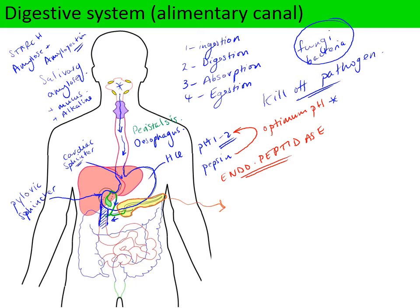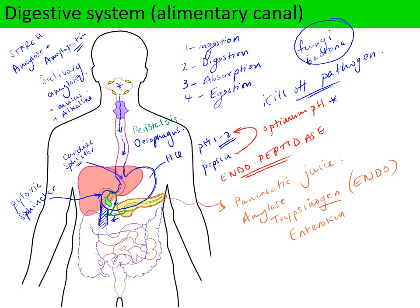The pancreas is an endocrine gland that secretes hormones like insulin but also makes digestive enzymes. Pancreatic juice contains pancreatic amylase to break down starch, and an enzyme called trypsinogen, which is another endopeptidase that breaks down larger proteins into shorter fragments. Trypsinogen is an inactive form of endopeptidase. Another enzyme from the pancreas called enterokinase cleaves off a portion of trypsinogen to activate it, releasing the active trypsin — the endopeptidase that continues the breakdown of proteins.